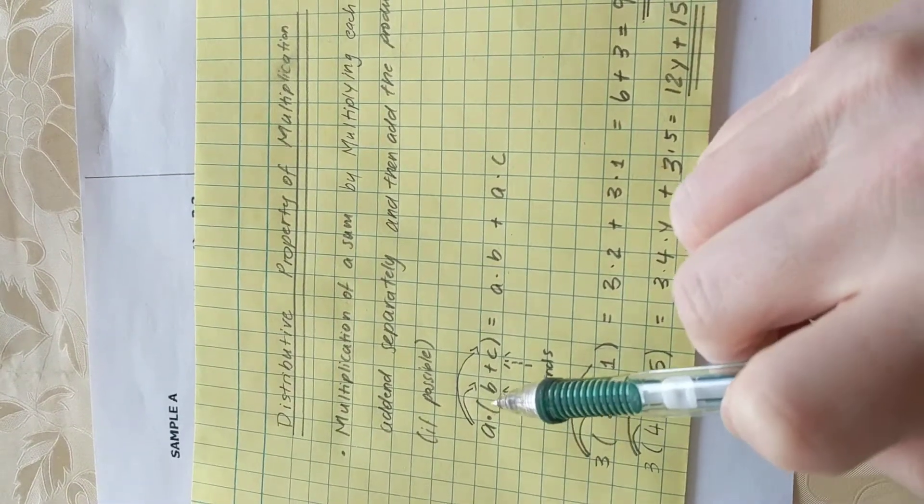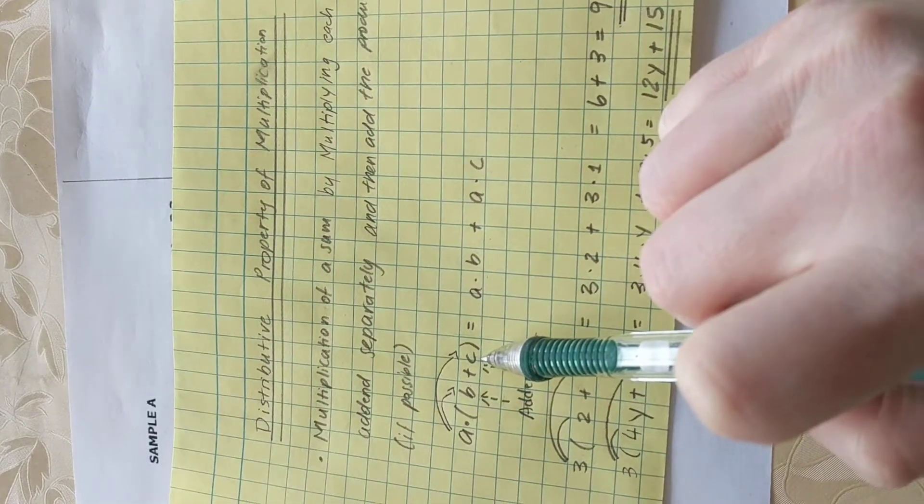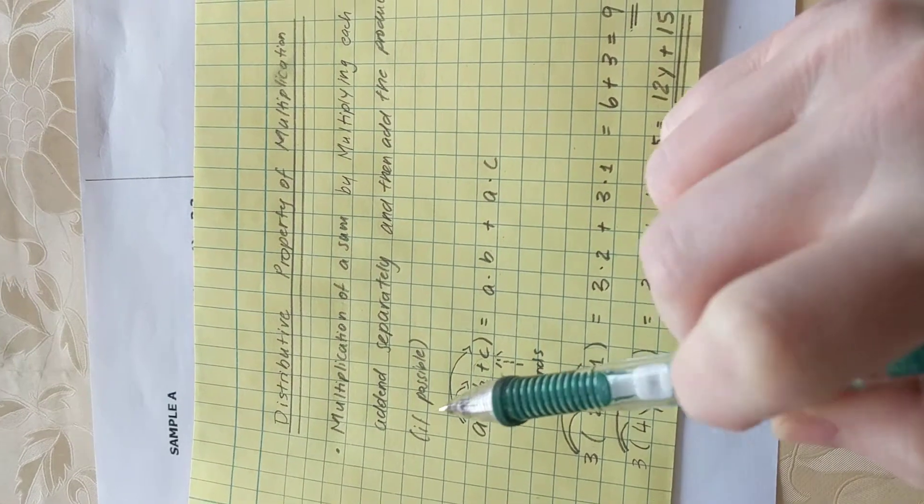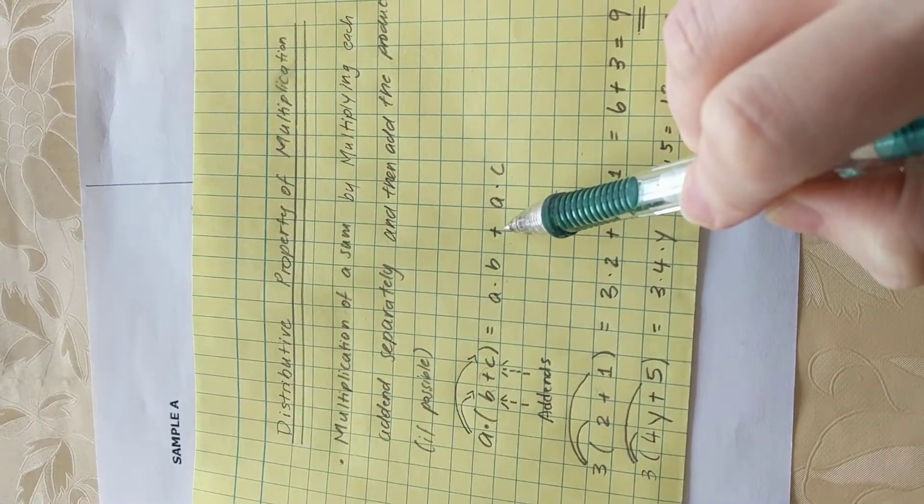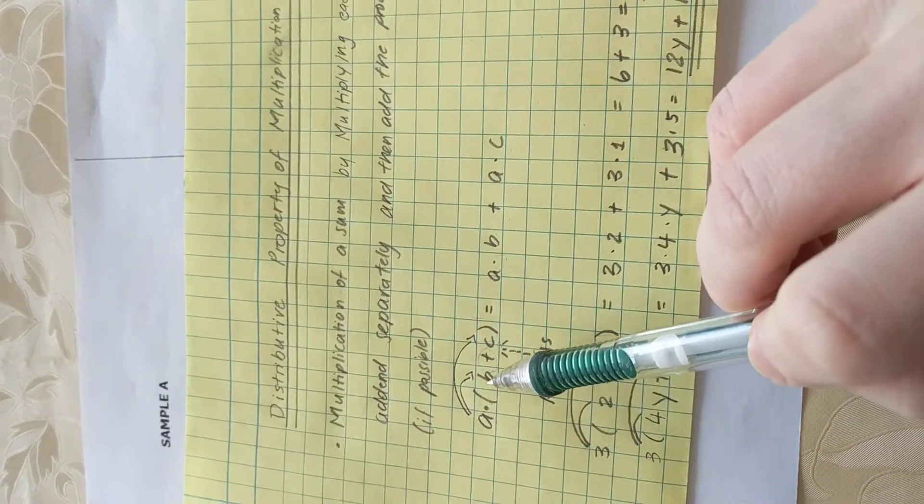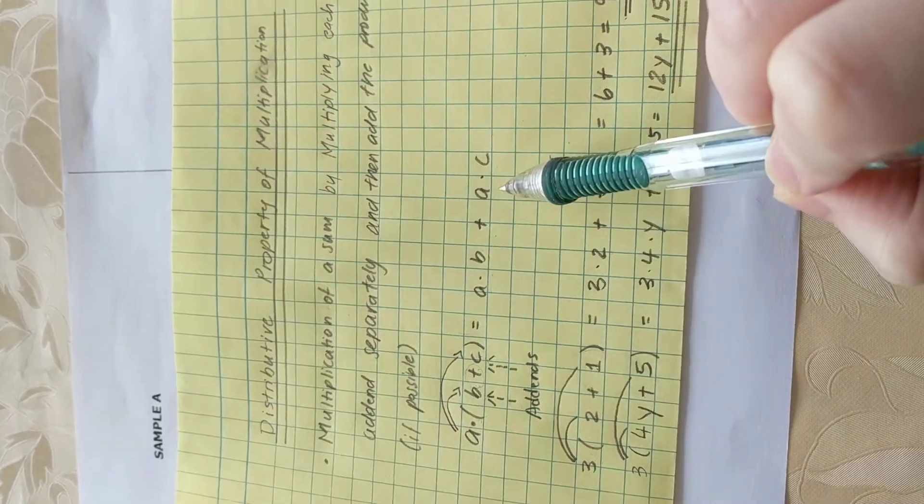And what this says is a gets distributed to b and a gets distributed to c. The mathematical operation in between b and c is a plus. Therefore, we are putting a plus in between on the right-hand side as well. So that means a times b plus a times c.